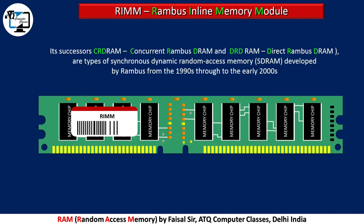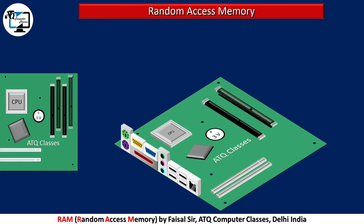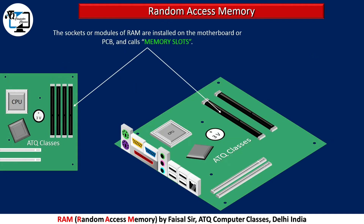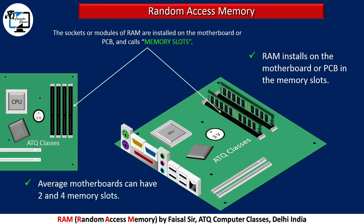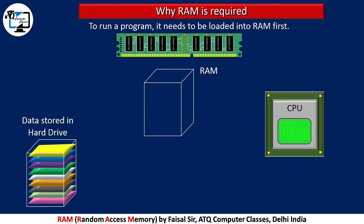Current Rambus Dynamic RAM and Direct Rambus Dynamic RAM are types of synchronous dynamic random access memory developed by Rambus from the 1990s through the early 2000s. All RAM sockets and modules are installed on the motherboard or PCB in memory slots. An average motherboard can have two to four memory slots.